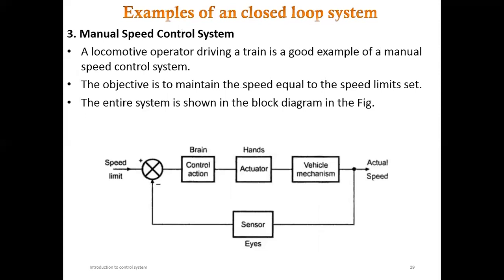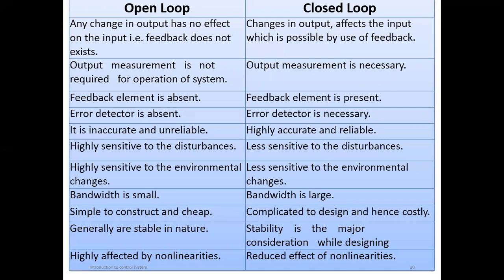Another example is the manual speed control system. When you are driving a vehicle, you are the feedback control element. You see the road ahead — if a car is ahead, you press the brakes; otherwise you press the accelerator. It is up to you how much speed to apply and how much to slow down. This is an example of a manual speed control system.